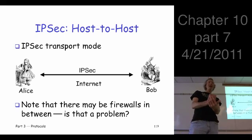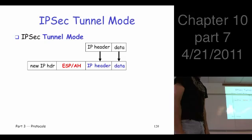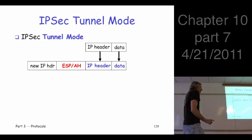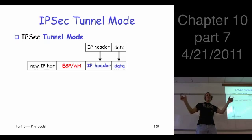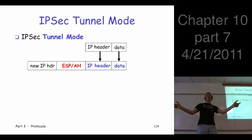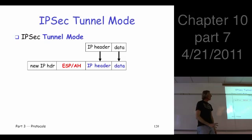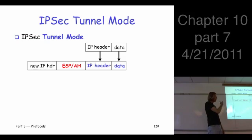People thought about that — maybe there are firewalls — so maybe people would just do the IPSec at the firewalls, not at the hosts. In fact, that's what's done often in practice. You just have IPSec going from firewall to firewall and the hosts don't know anything about it. In that case, transport mode won't work. So they came up with the alternative: so-called tunnel mode.